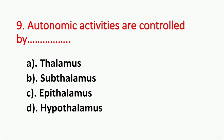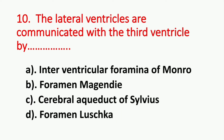Question number 9. Autonomic activities are controlled by? Option A: Thalamus. Option B: Subthalamus. Option C: Epithalamus. Option D: Hypothalamus. The answer is Option D, Hypothalamus.